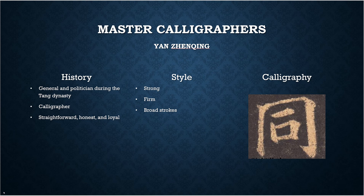Next, we have Yang Sen-Quin. He was both a general and politician for the Tang dynasty. He was a very well-known calligrapher who was very straightforward, honest, and loyal. These are some of his most defining character traits, and his calligraphy style was developed to reflect this, in that it was known to be a very strong style with firm, broad strokes.